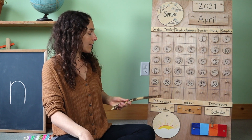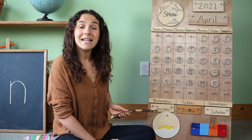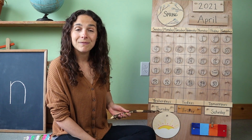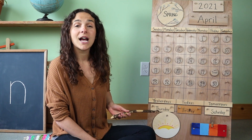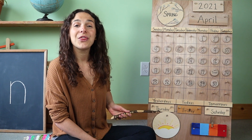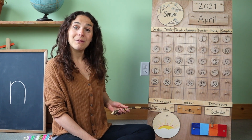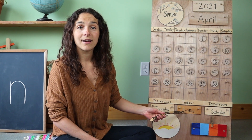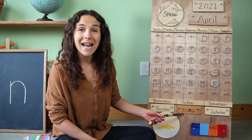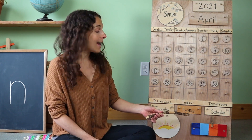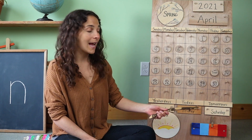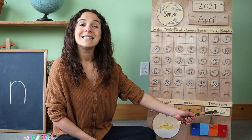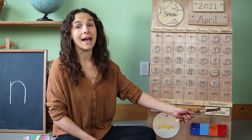Let's travel down to the bottom of the chart. This says that yesterday was — do you remember? Here's your clue. Thursday. Yesterday was Thursday, so today is Friday — the last day of the weekday. And tomorrow will be Saturday, the first day of the weekend.